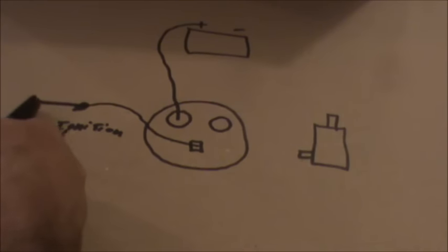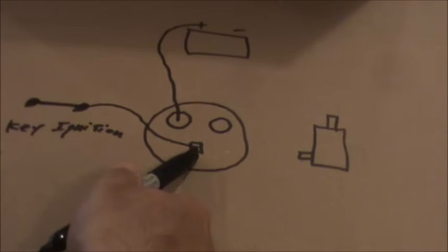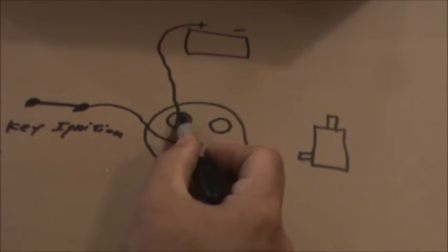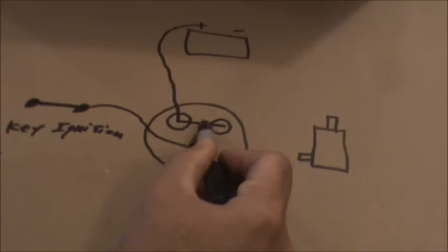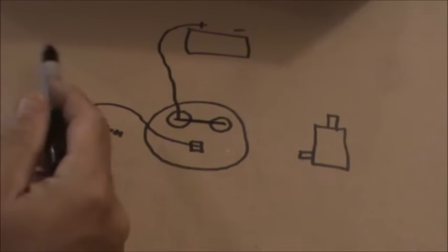What happens is when your key is turned on, it sends 12 volts down to this little spade connector. There's an electromagnetic switch here that closes off these two terminals.